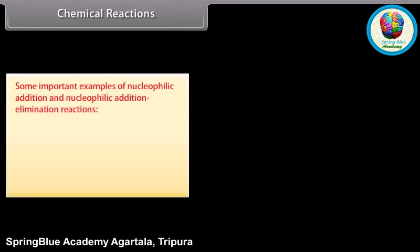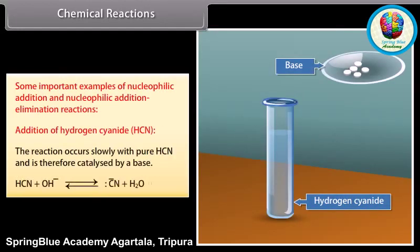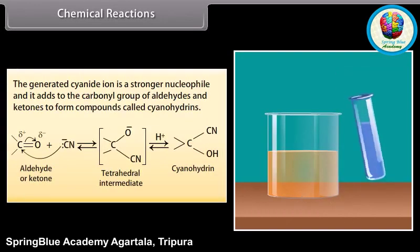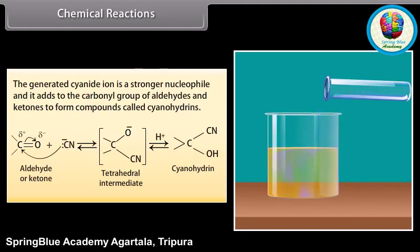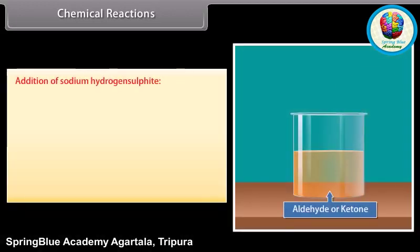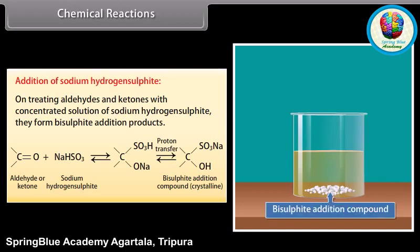Some important examples of nucleophilic addition and nucleophilic addition-elimination reactions. Addition of hydrogen cyanide: the reaction occurs slowly with pure HCN and is therefore catalyzed by a base. The generated cyanide ion is a stronger nucleophile and it adds to the carbonyl group of aldehydes and ketones to form compounds called cyanohydrins. Addition of sodium hydrogen sulfite: on treating aldehydes and ketones with concentrated solution of sodium hydrogen sulfite, they form bisulfite addition products.